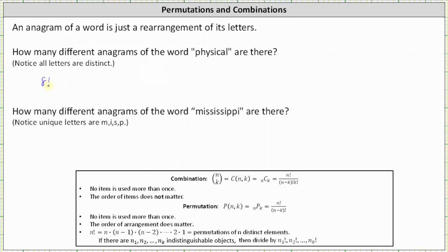However, eight factorial is equal to eight permute eight. Eight factorial is equal to eight times seven times six times five times four times three times two times one.